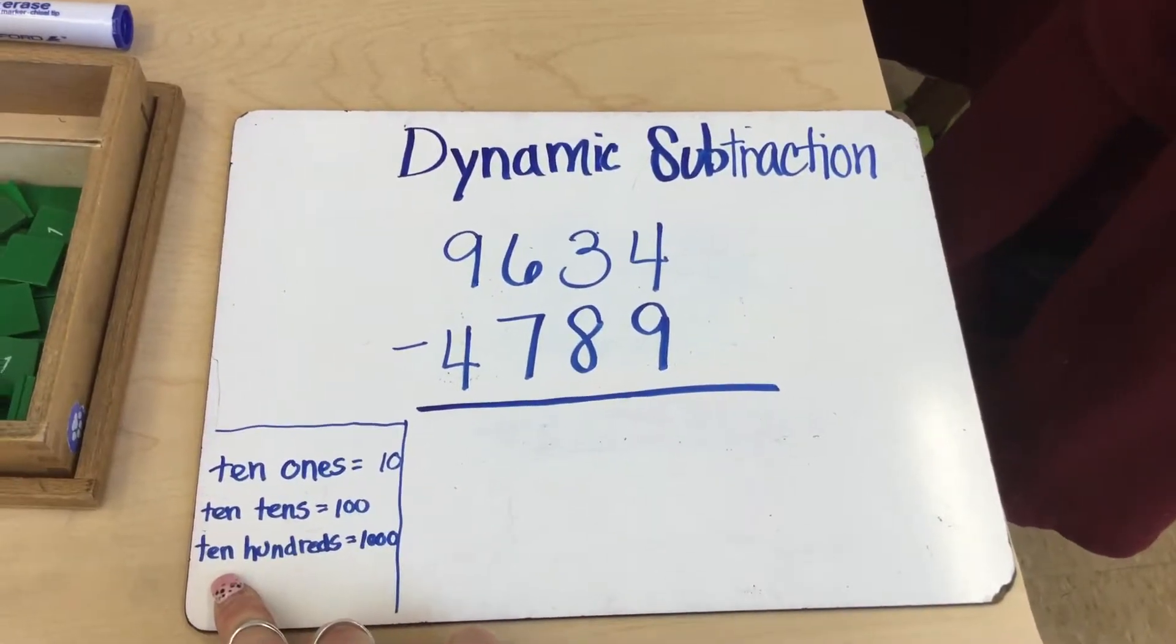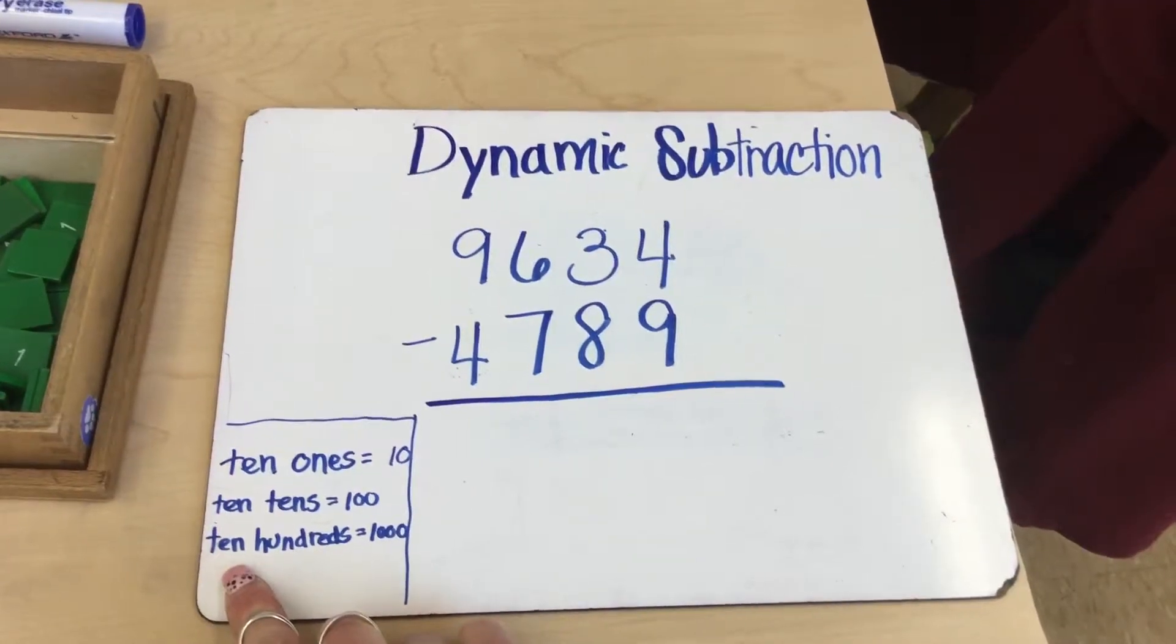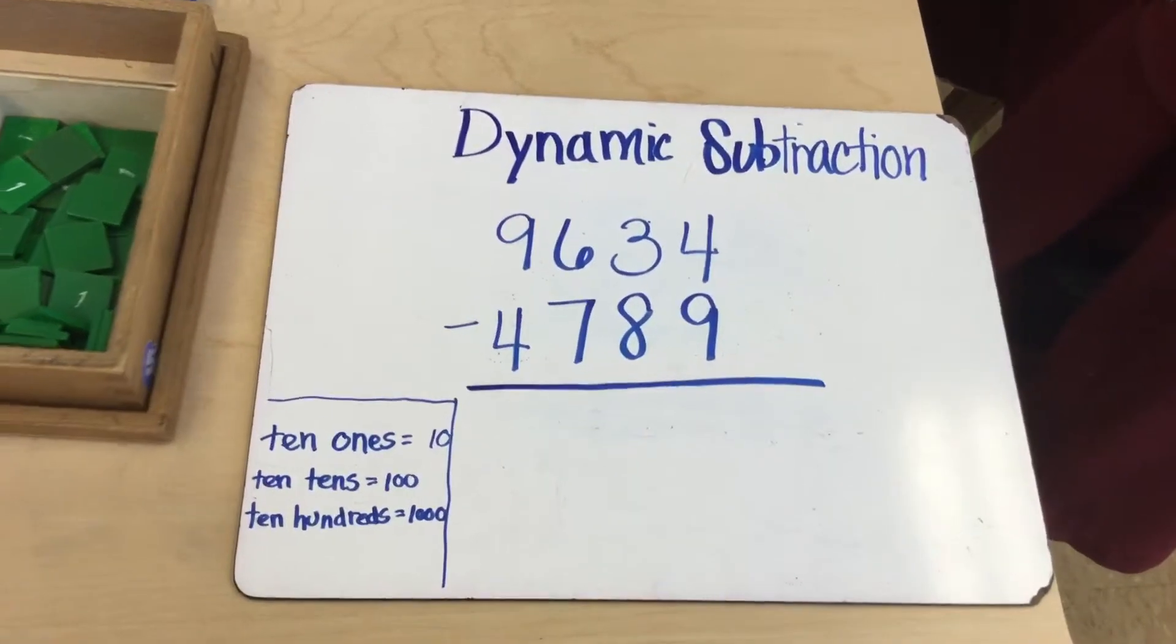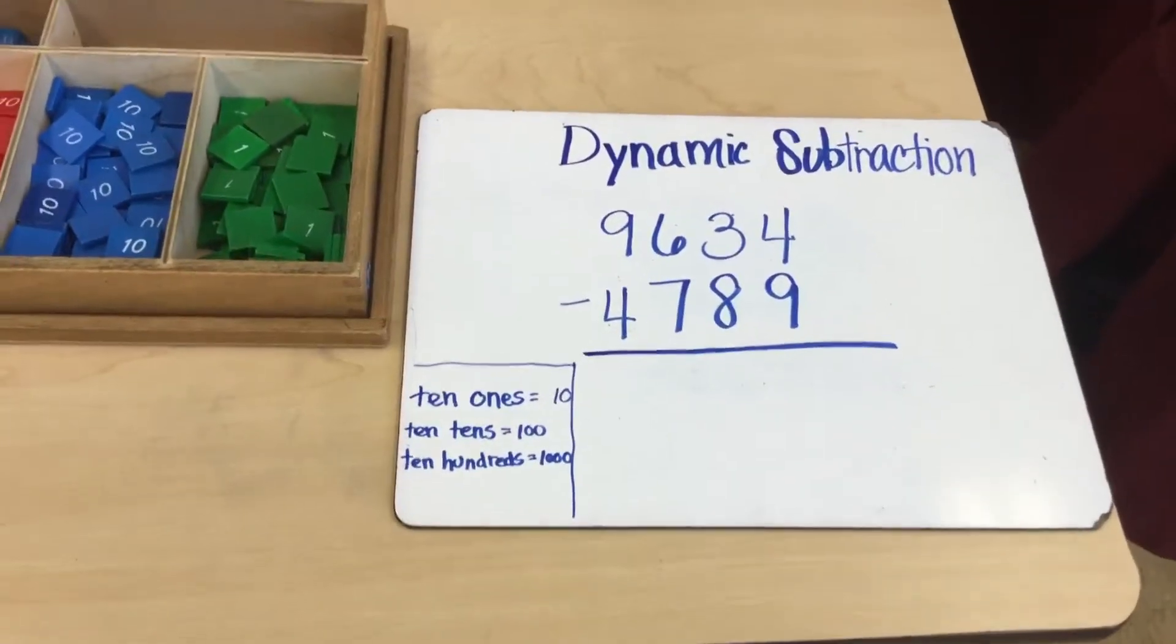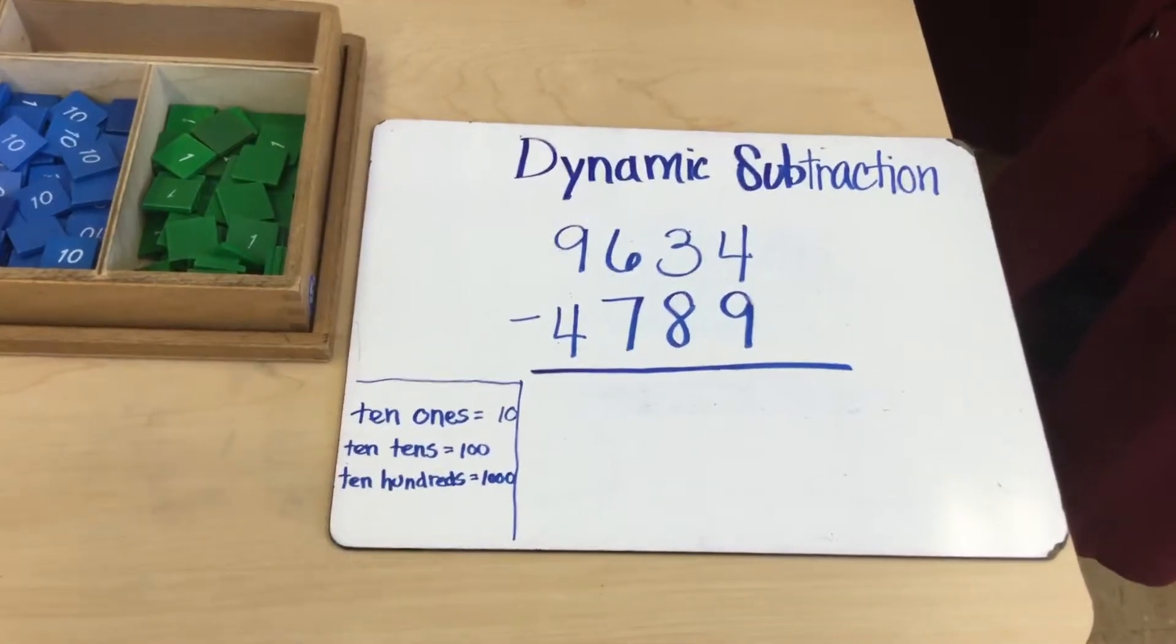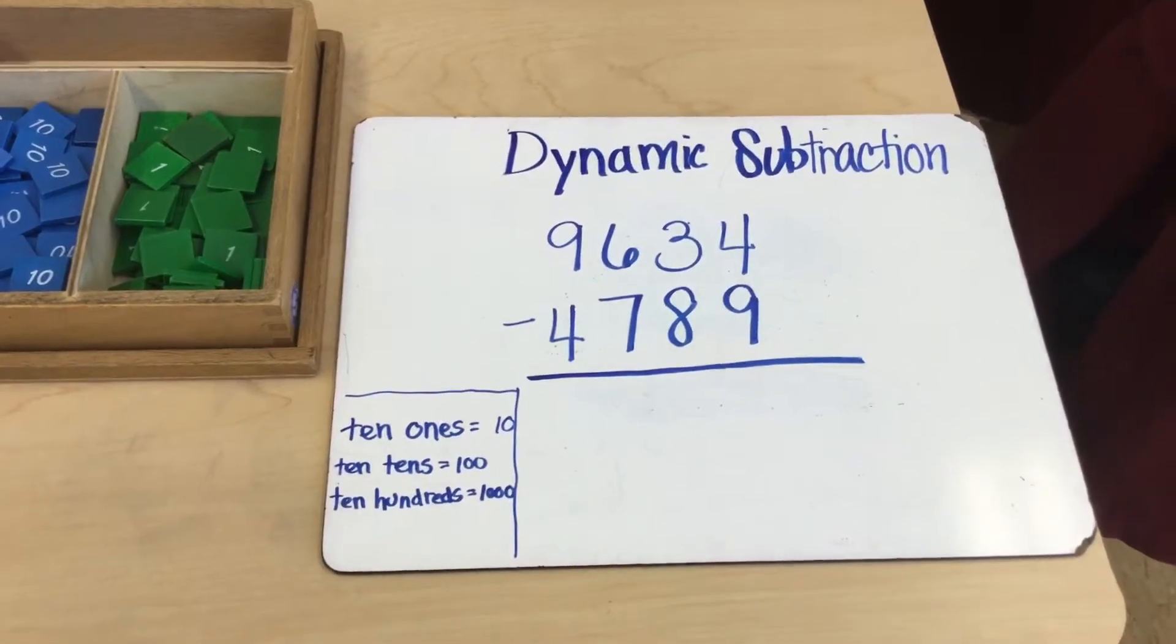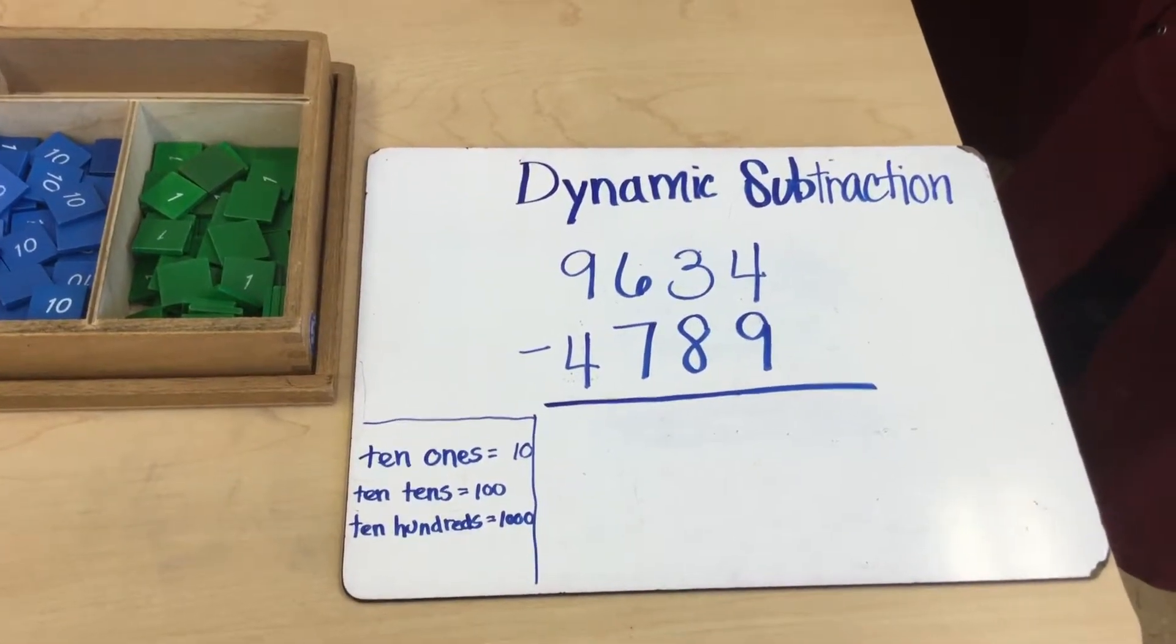So looking at my equation I am at nine thousand six hundred thirty-four take away four thousand seven hundred eighty-nine. One main difference with dynamic subtraction: you only have to build your top number. With subtraction your top number is your total. The second number is your part that you know. That's the part you're going to be taking away.